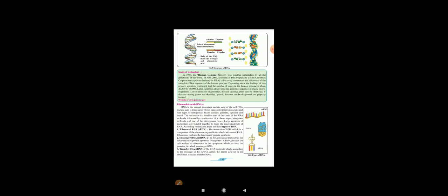Now, let us study RNA, that is ribonucleic acid. RNA is the second important nucleic acid of the cell. This nucleic acid is made up of ribose sugar, phosphate molecules and four types of nitrogen bases: adenine, guanine, cytosine and uracil. The nucleotide, that is the smallest unit of the chain of RNA molecule, is formed by the combination of ribose sugar, phosphate molecule and one of the nitrogenous bases. Large number of nucleotides are bonded together to form the macromolecule of RNA. According to the function there are three types of RNA. In this figure 16.6 you can see the types of RNA: mRNA, rRNA, and tRNA.